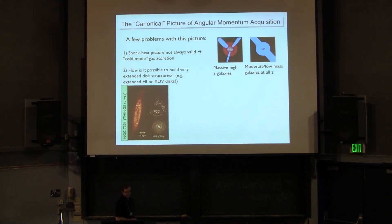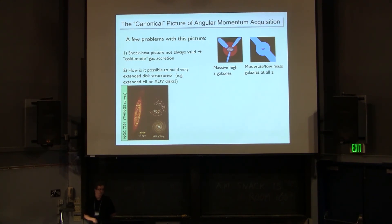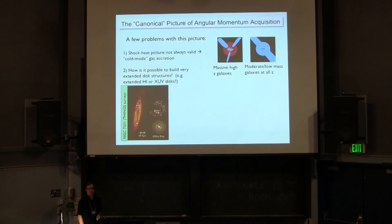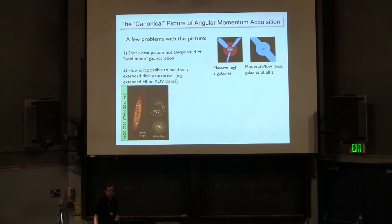There have also been some recent observations of very extended disk structures - not always in stars, but for example extended H1 disks, seen here from the THINGS survey compared to the size of our own Milky Way. The issue with these, or XUV disks, is that if the previous picture of angular momentum acquisition is just barely enough to explain the visible galaxies, where do you get the extremely high angular momentum material needed to have very extended disk-like structures? If you assume baryons have the same spin parameter as the dark matter, it's very difficult to produce high angular momentum material to create these extended disks.